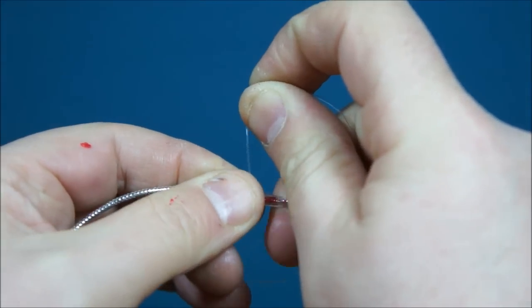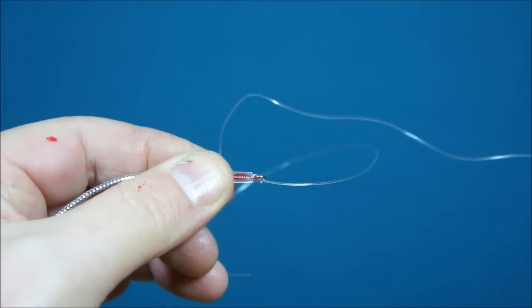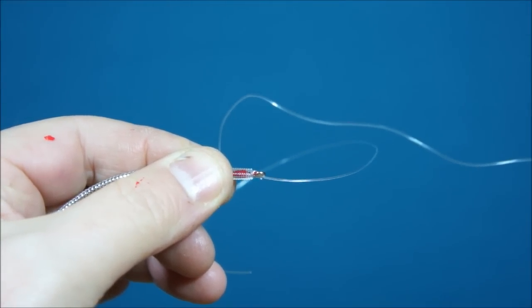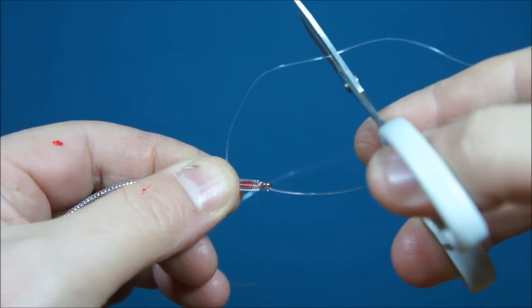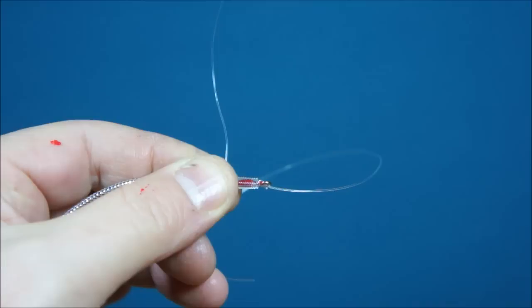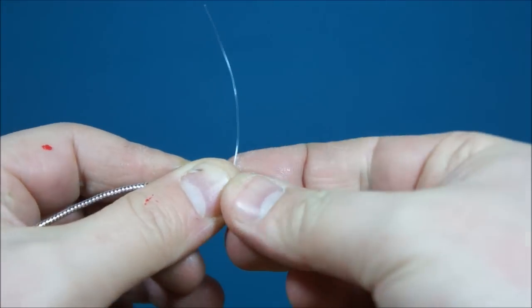I normally do somewhere between 10 and 15 turns. Then I can trim here. This is cutting the line back to the spool. There we go. Just swap hands, holding that all together.